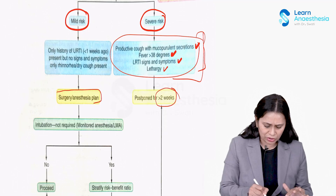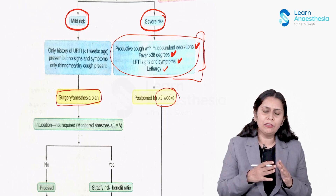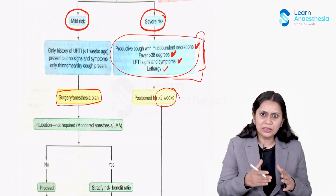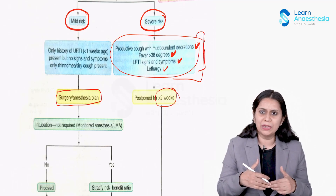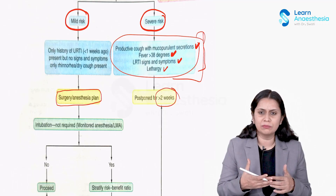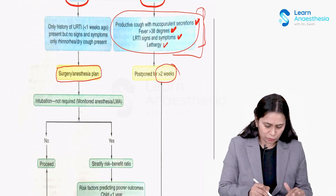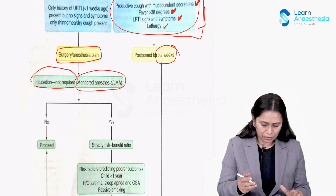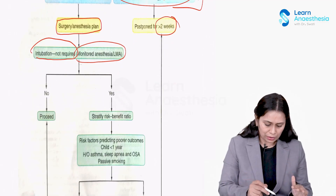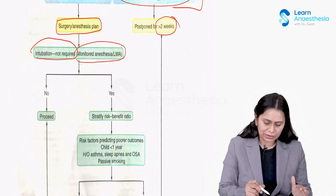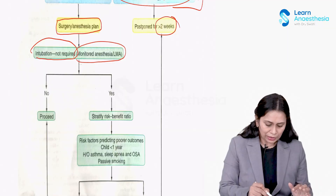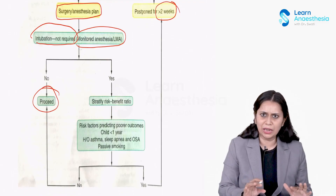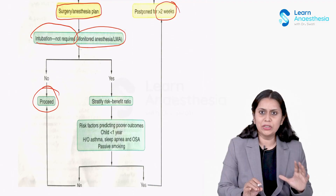Let us see what the surgery and anesthesia plan is. If the surgery requires intubation — such as an abdominal surgery with high risk of aspiration — intubation is required. But if we can get it done under monitored anesthesia care or LMA, and intubation is not required, we can simply proceed with surgery without cancellation.